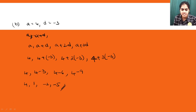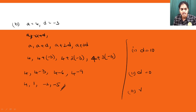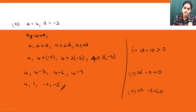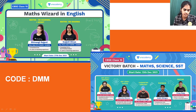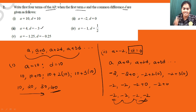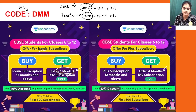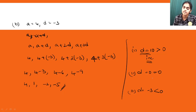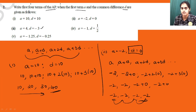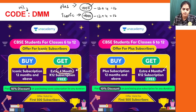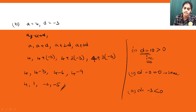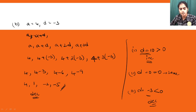Now for the important conclusions: in the first sub-part d was positive (+10), in the second d was 0, and in the third d was negative (-3). When common difference is positive, the AP is increasing — 10, 20, 30 is in increasing order. When common difference is 0, all terms are the same — no change. When common difference is negative, the AP is decreasing. So: positive d → increasing AP; d = 0 → constant AP; negative d → decreasing AP.